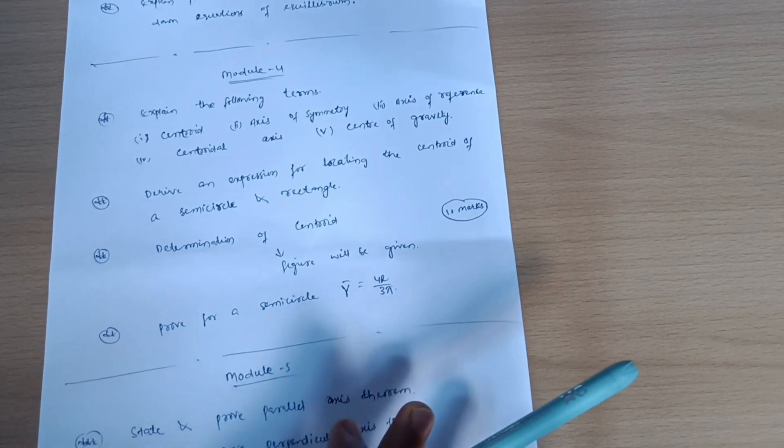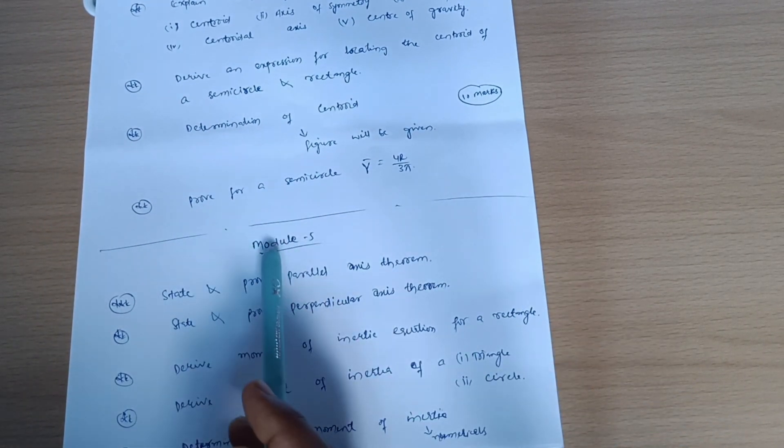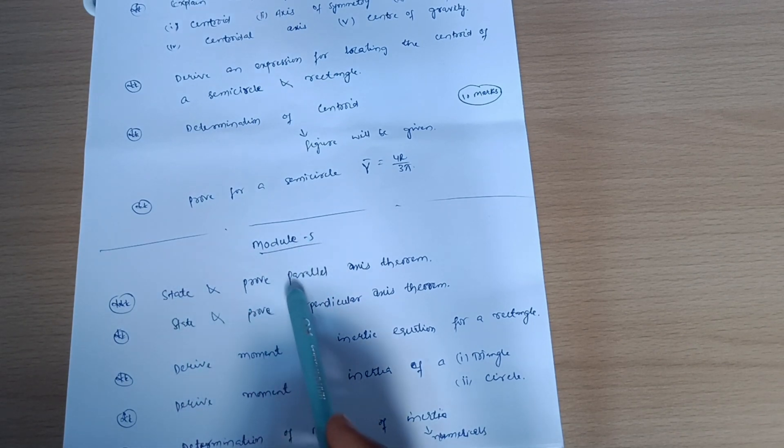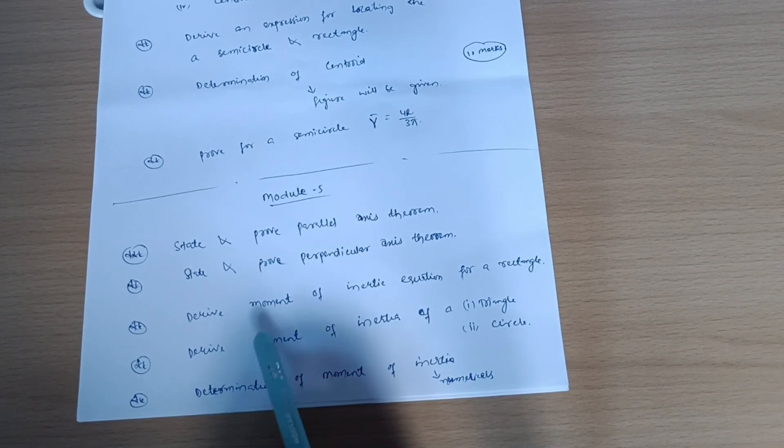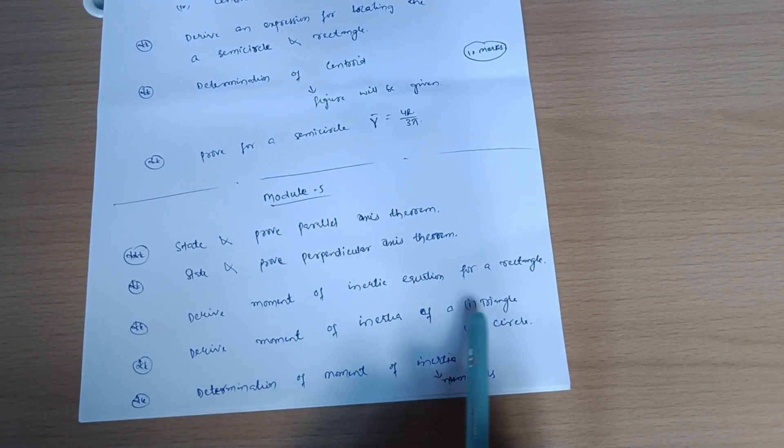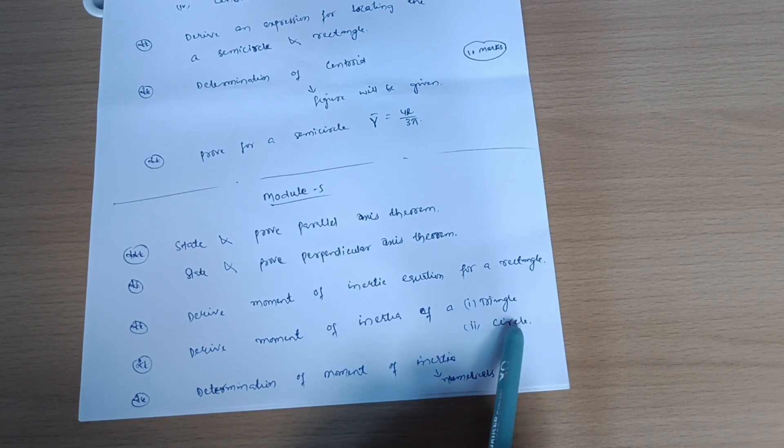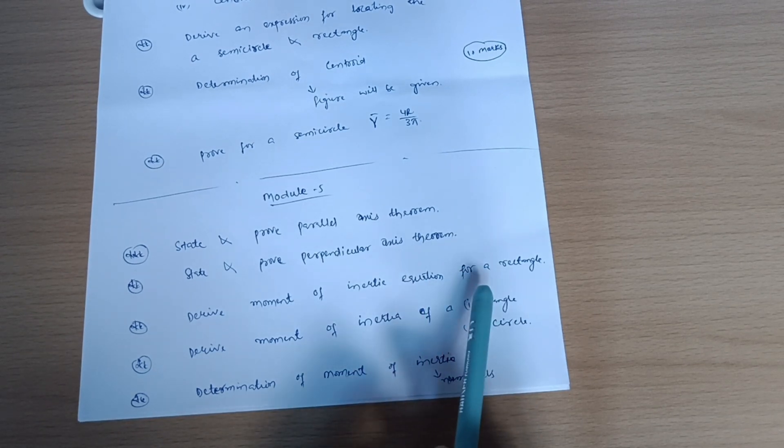Now if I talk about model fifth: state and prove parallel axis theorem, prove perpendicular axis theorem, derive moment of inertia equation for a rectangle, derive moment of inertia for a triangle and for circle also. These three derivations you must go through. Definitely in the examination one will be there.